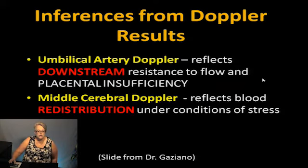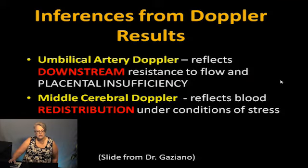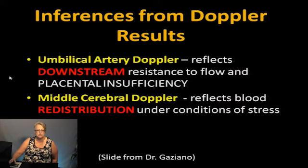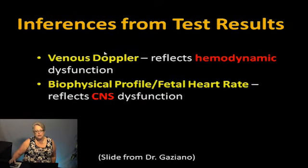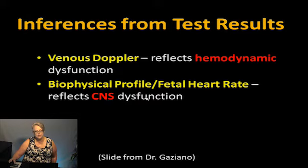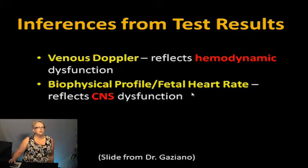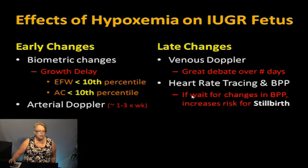To summarize the inferences from Doppler: umbilical artery Doppler reflects downstream resistance to flow and placental insufficiency; the mid-cerebral artery reflects blood redistribution under conditions of stress; venous Doppler reflects hemodynamic dysfunction; biophysical and heart rate tracing reflect CNS dysfunction. It's a combination of these that gives us the best evaluation of the baby.